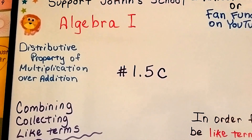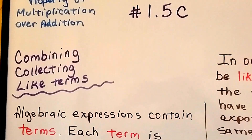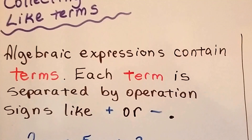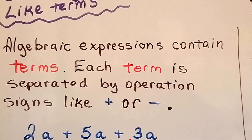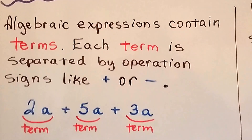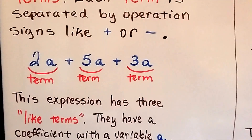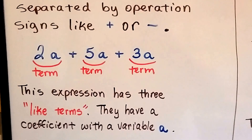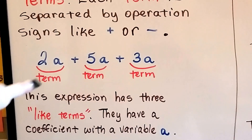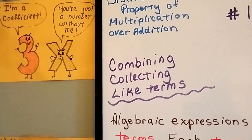Algebra 1, number 1.5c. We're going to talk about combining and collecting like terms in this video. Algebraic expressions contain terms, and each term is separated by an operation sign, like a plus or a minus. In this expression, it has three like terms, and they have a coefficient — that's the number in front of the variable — with a variable a. The coefficient is the number that sits in front of the variable.